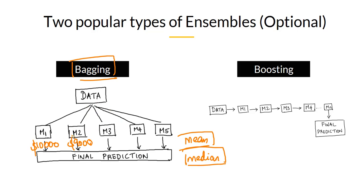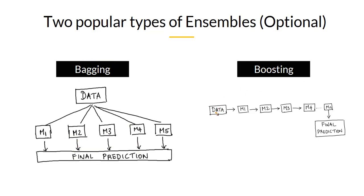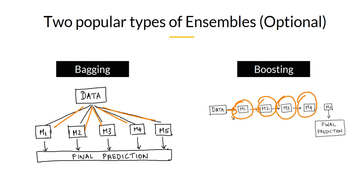Bagging can be done in parallel — you can build all these models simultaneously and combine them into a final prediction. On the other hand, in boosting, you first build one machine learning model, it comes up with a prediction, and then you try to improve that prediction by building another model, and another, and so on. You keep making improvements on the earlier stage models, and finally you arrive at a refined prediction. That is the general principle behind how boosting works.